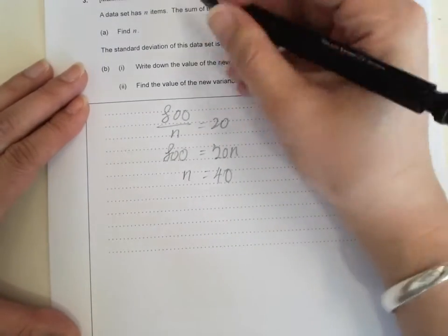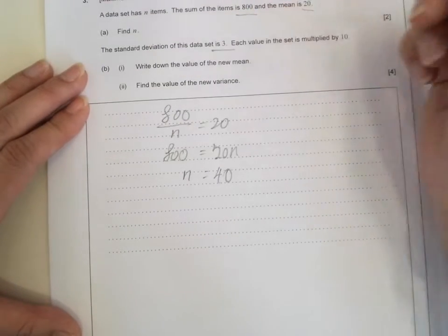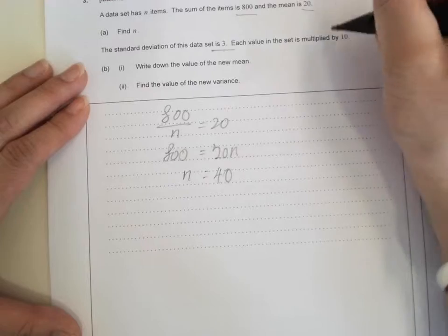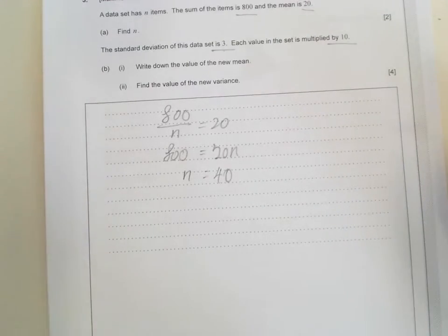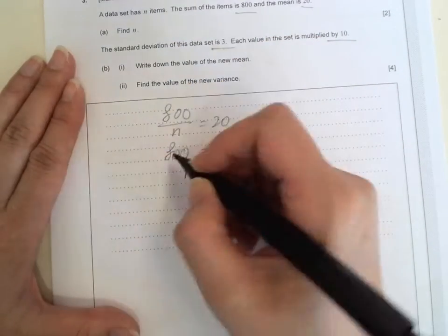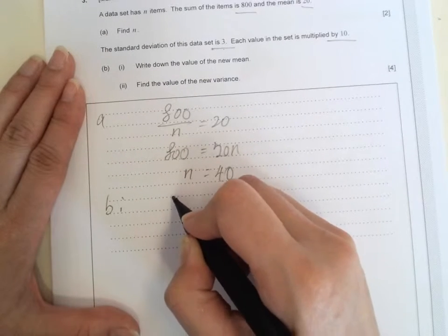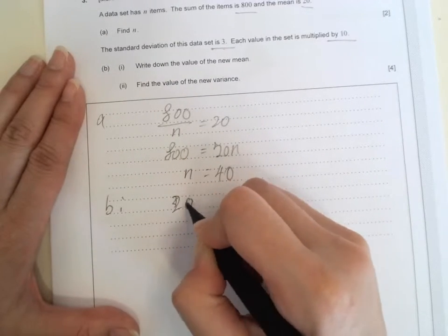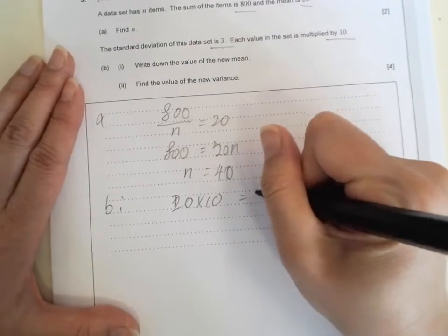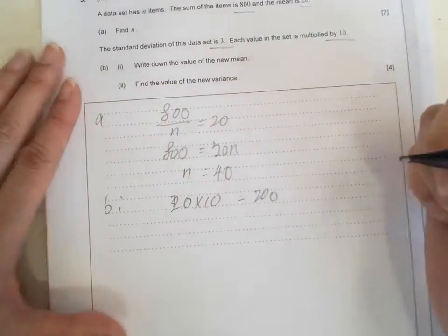And then the next set is getting harder. The standard deviation is 3 and each data is multiplied by 10. So the new mean, we're just multiplying nice and easy. So we have 20 times 10 becomes 200. Nice and easy.